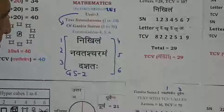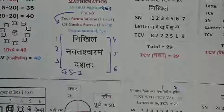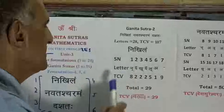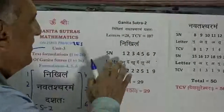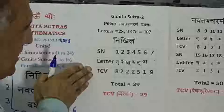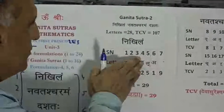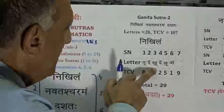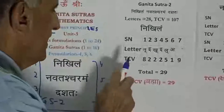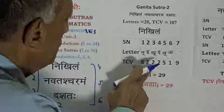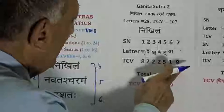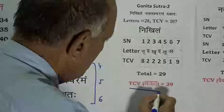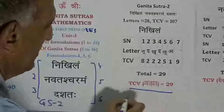Let us revisit these formulations. The formulation nickname is a scripture of 7 letters. The table with serial numbers 1 to 7 gives the letters Na, E, Kha, E, La, A, and Swar, with TCV values 8, 2, 2, 2, 2, 5, 1, and 9 — a summation value of 29. This summation value is parallel to the TCV value of formulation Brahma.